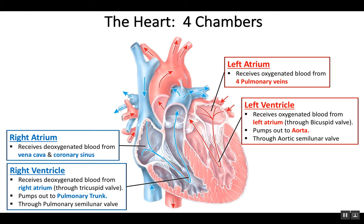So these are the four chambers. We need to know what kind of blood is in them — oxygenated or deoxygenated — be able to identify them, understand proper blood flow from atrium to ventricle, and position the valves properly.